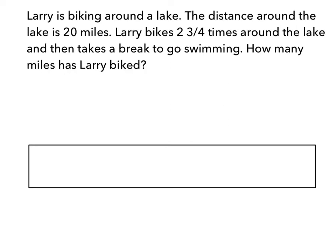Larry is biking around the lake. The distance around the lake is 20 miles. Larry bikes 2 and 3 fourths times around the lake and then takes a break to go swimming. How many miles has Larry biked?